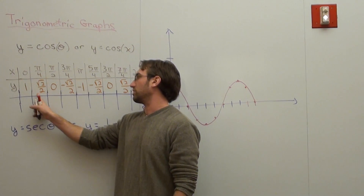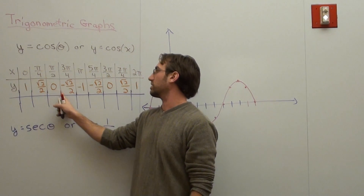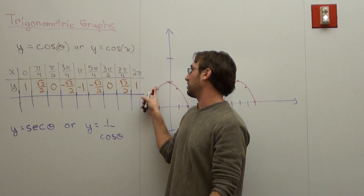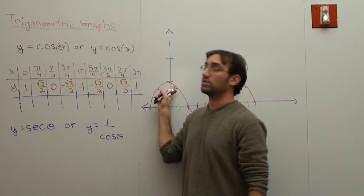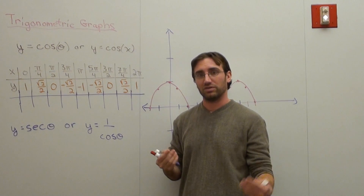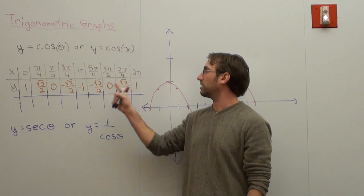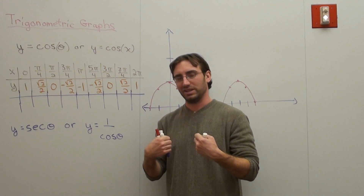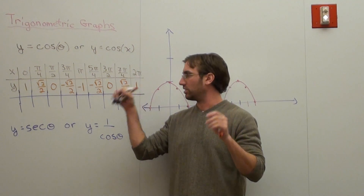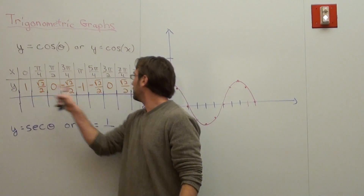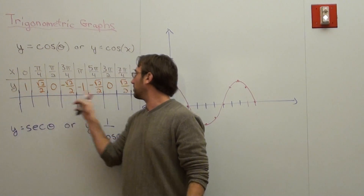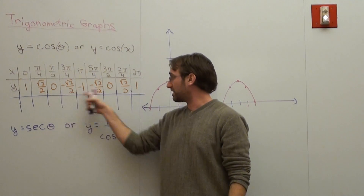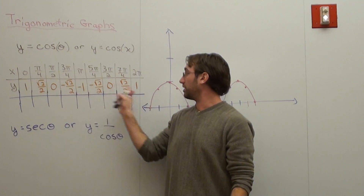So after 1 comes root 2 over 2, after root 2 over 2 comes 0, after 0 comes negative root 2 over 2, etc. So after 1, without even looking at this, it's going to be root 2 over 2, and after root 2 over 2 is going to be 0. It's going to repeat itself over and over once you find its period, and its period is 2 pi — that means when it repeats again. So all you really got to do is write the period down, and once you figure that out, you can go in either direction. So before 1 is going to be root 2 over 2, and before root 2 over 2 is 0. That's the pattern from 1 to 1.